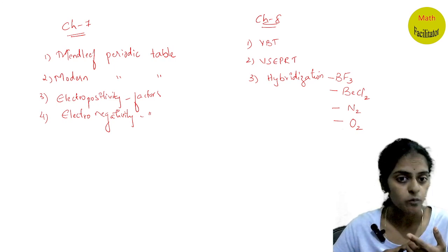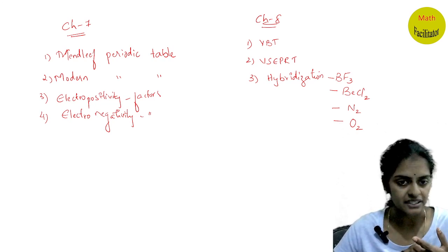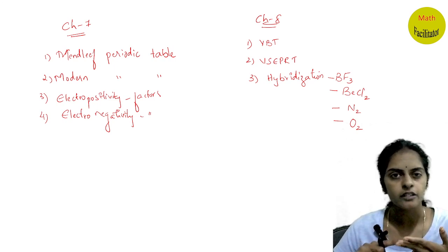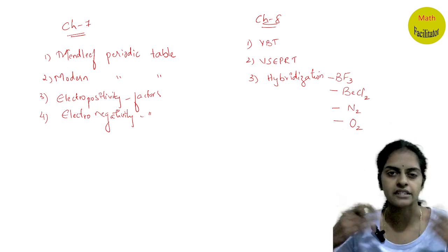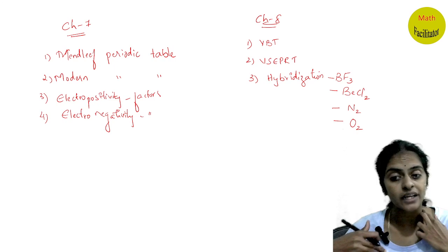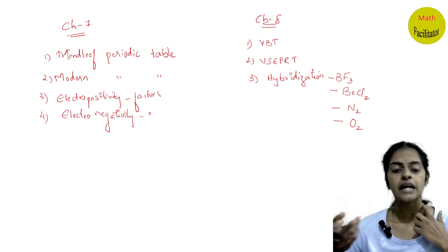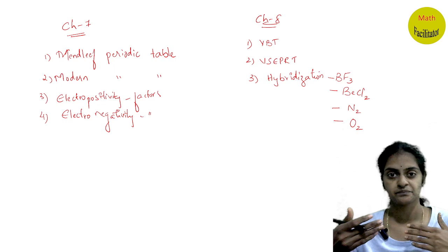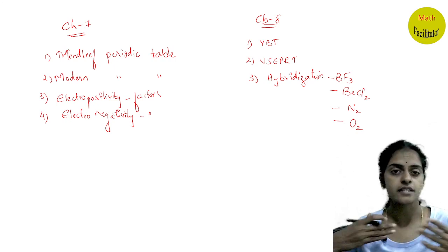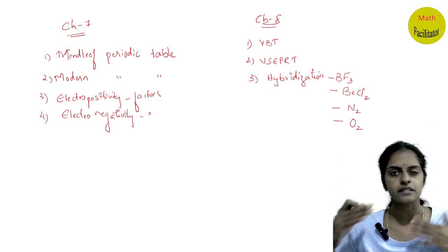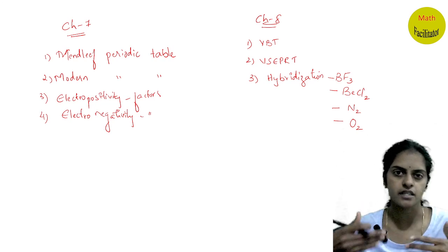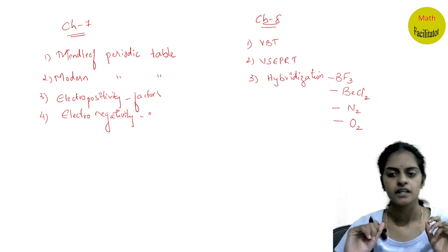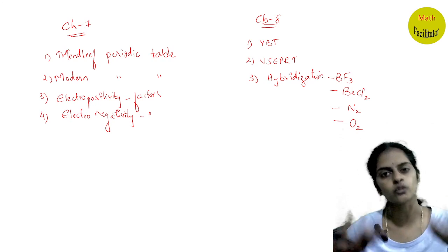Then you will learn what is electropositivity and the factors affecting it and electronegativity and the factors affecting it. Electropositivity and negativity, only the definition is different, factors affecting it, you will find the same headings. So learn it together, it will be easy for you to remember. And along with this, you will learn how the atomic size is changing across the periods, across the group. These things, how they are changing across the periods and groups, you will try to learn them. So this is from chapter seven.